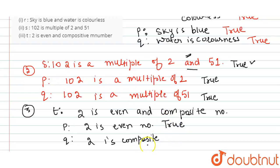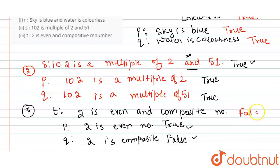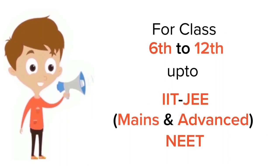Composite numbers are those having more than one factor besides 1 and themselves. 2 is not a composite number, so statement Q is false. Since the compound statement is connected by 'and' and one component is false, the overall compound statement is false. Therefore statement T is not valid.